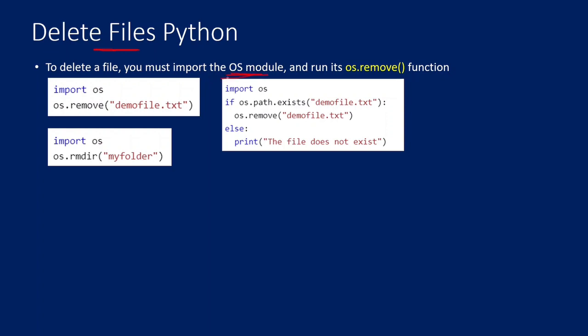To delete a file in Python, you must import the `os` module. This `os` module has a function called `remove` that will help you delete a file. To this function you need to pass the location of the file. If the file is in the same directory where you are executing your Python file, you can just give the file name; otherwise you need to give the full path.